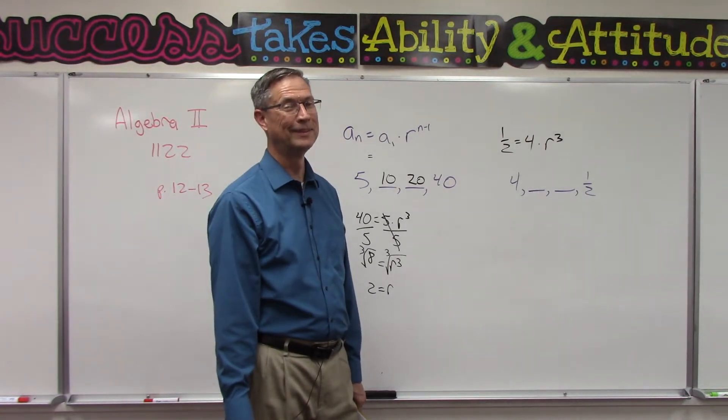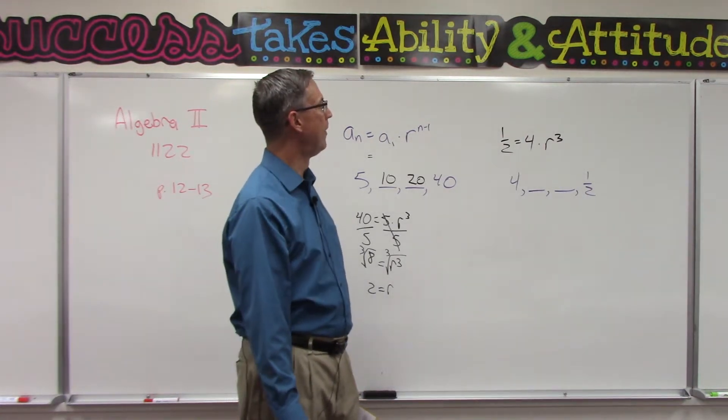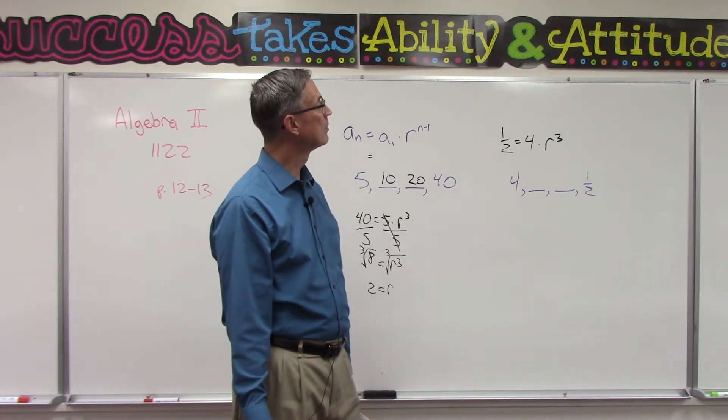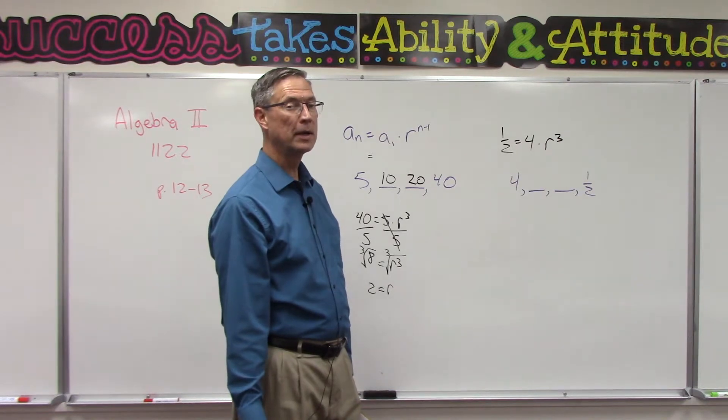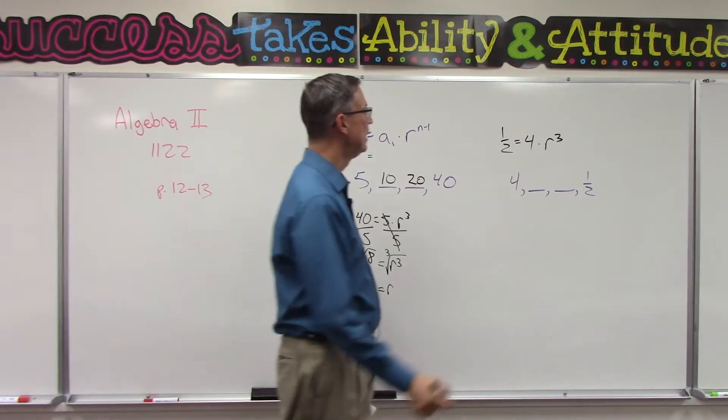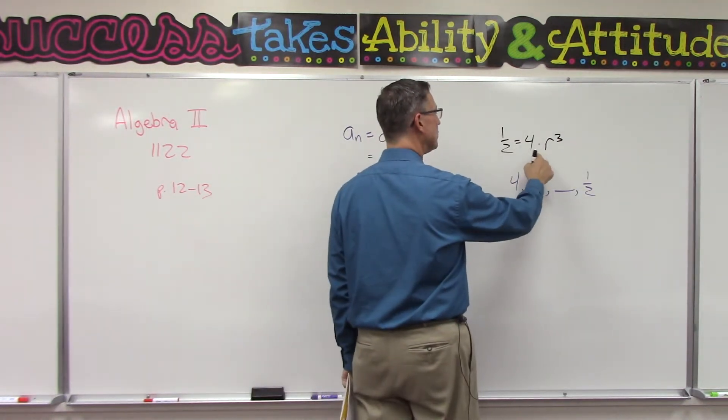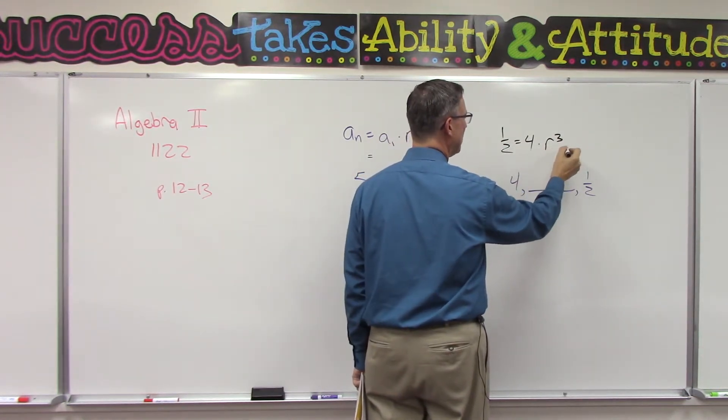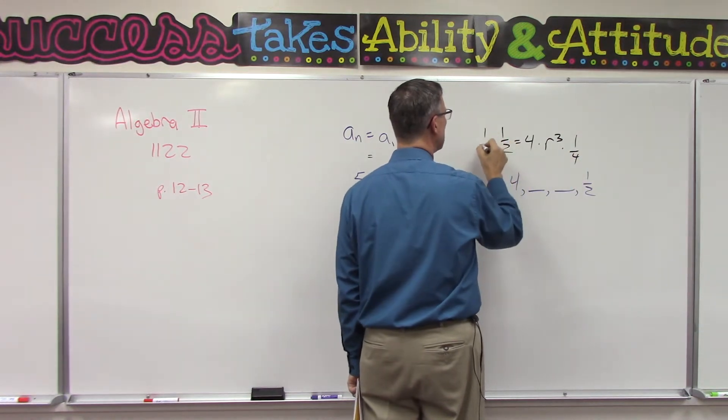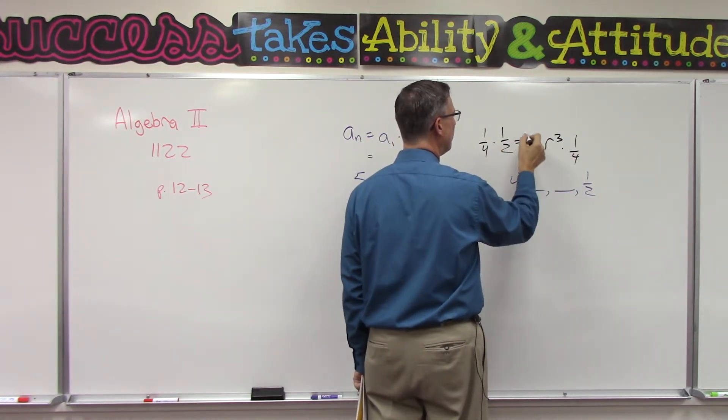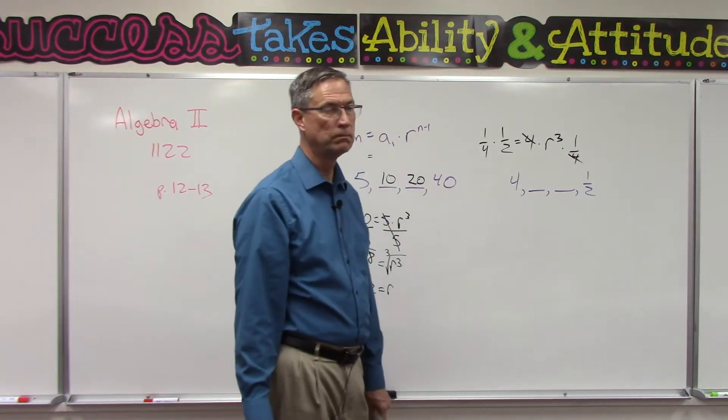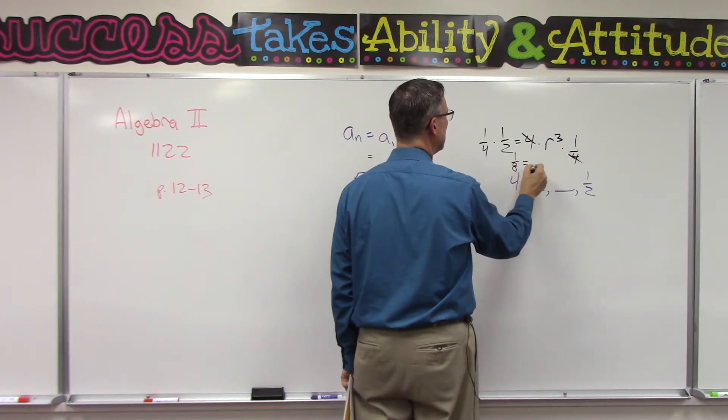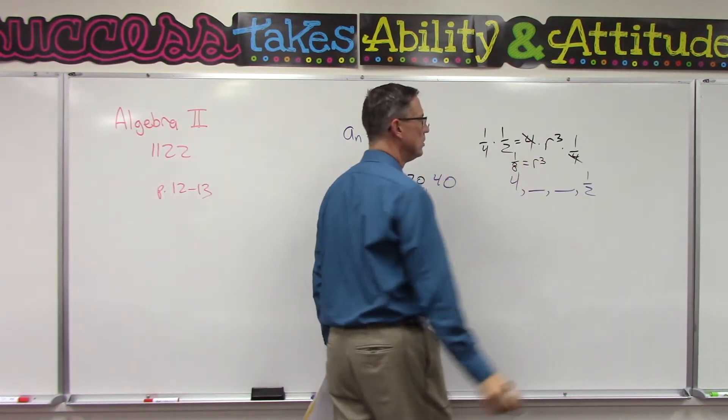So we need to solve for r. We think back to algebra one, trying to isolate the variable. I want to get rid of this 4. Well, we can think of it as dividing by 4, or maybe think of it as multiplying both sides of the equation by one fourth, so that that will cancel. We do the same thing on this side, so now I have one eighth equals r to the third power.